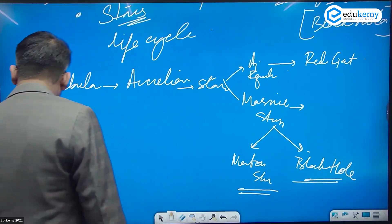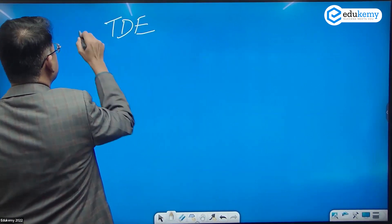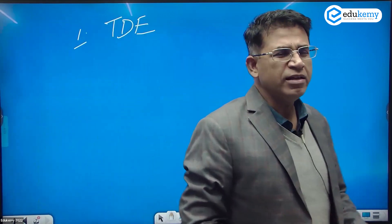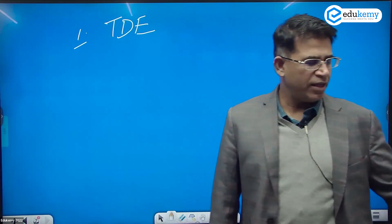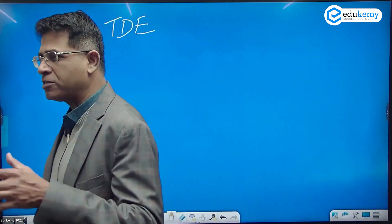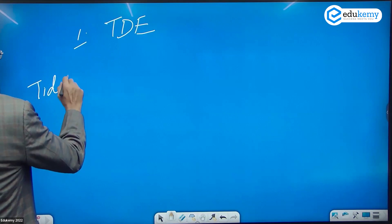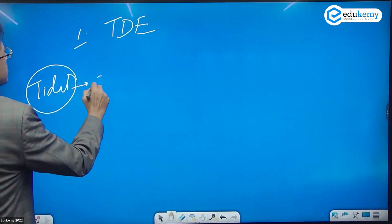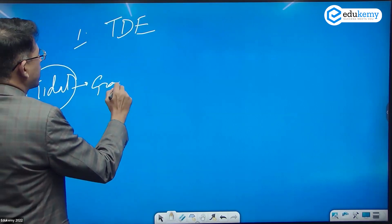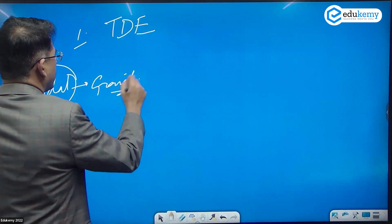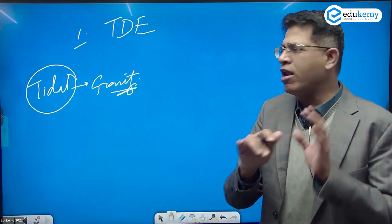Before this, I must tell you some more concepts. There is a concept called TDE - Tidal Disruptive Events. In space sciences and astronomy, whenever you hear the word 'tidal,' it means gravitational. Tidal is about gravity - Earth's tidal pull, tidal waves, tidal disruptions - they all are related to gravity.